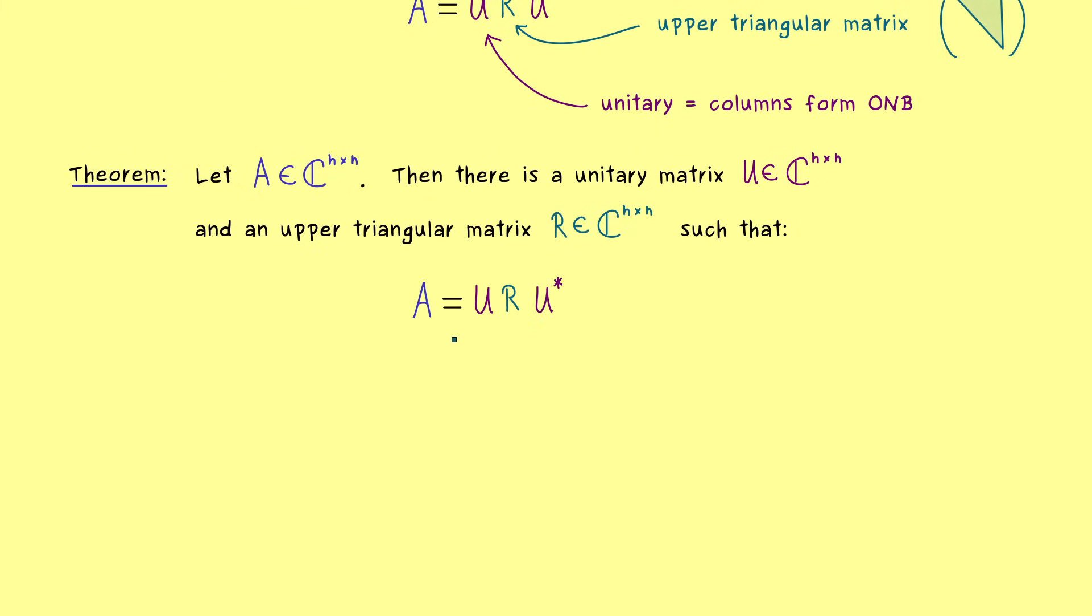So you could simply say A is similar to an upper triangular matrix R. However, this is not a new result, because the Jordan normal form already tells us that. The new thing is it is similar where the transformation matrix is unitary. And only in that case we call the upper triangular matrix R a Schur normal form. So this is a new name. And please note that in general a Schur normal form is not uniquely determined. So definitely a given matrix A could have different Schur normal forms. So the important thing you should remember is that A is always unitarily similar to an upper triangular matrix, which we call the Schur normal form.